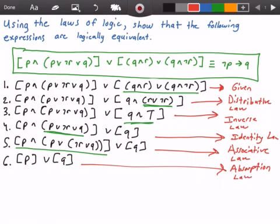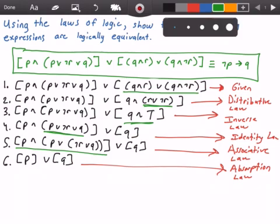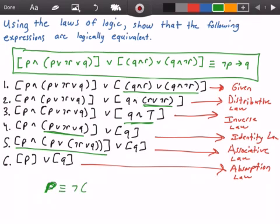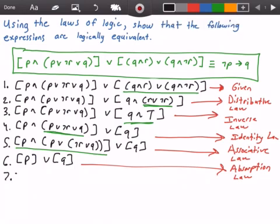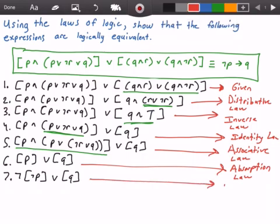Now we're going to use double negation. The double negation law states that P is logically equivalent to ¬¬P, or vice versa — if we had ¬¬P that's logically equivalent to P. We're going to change our P here to ¬¬P, so we get ¬¬P∨Q, using the double negation law.